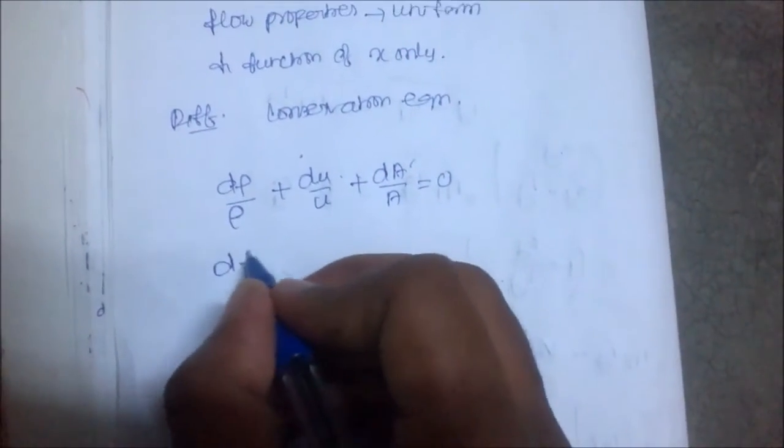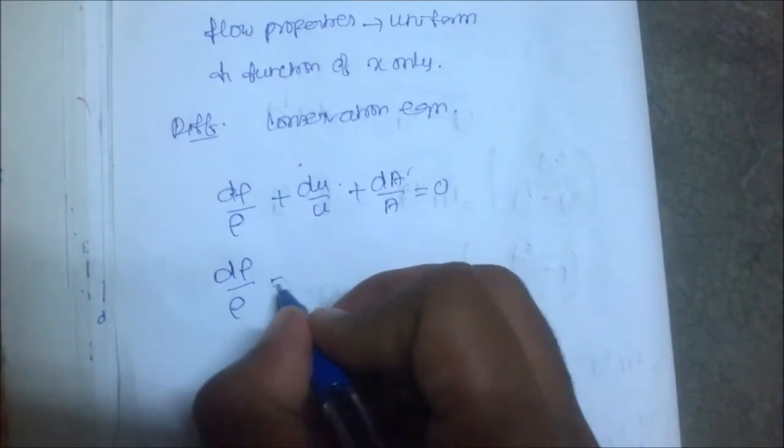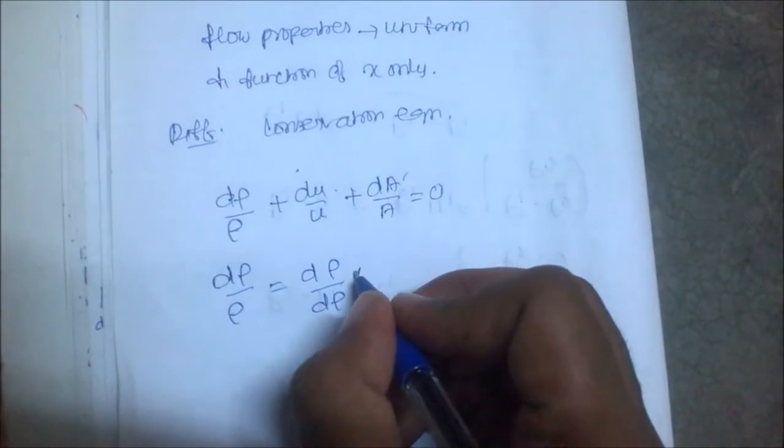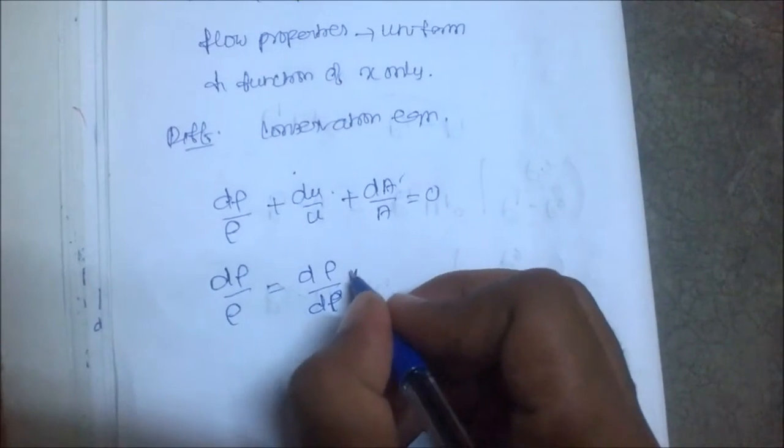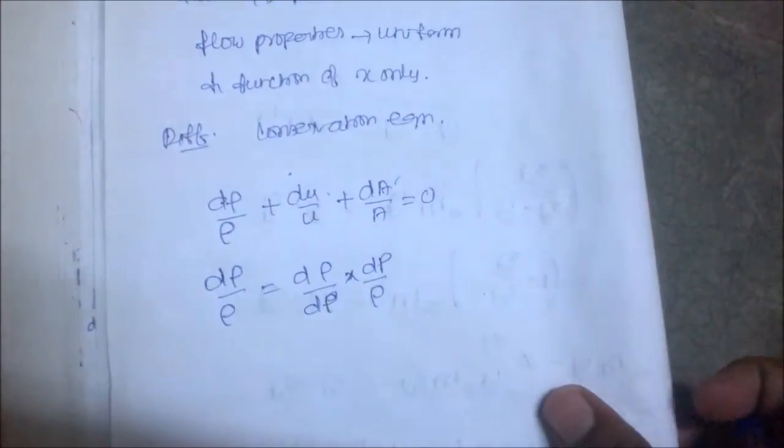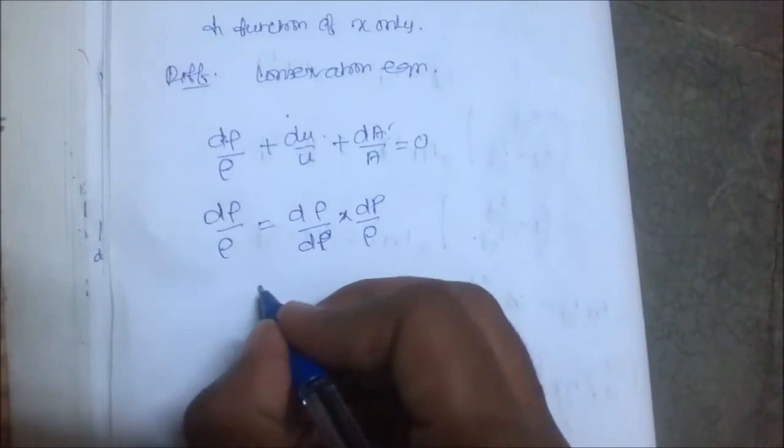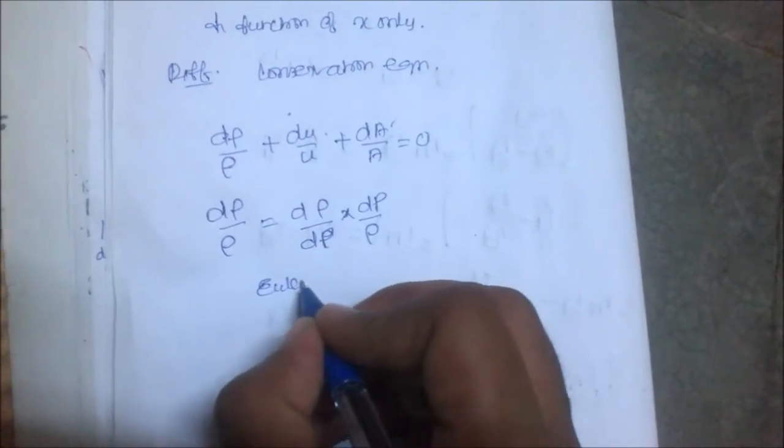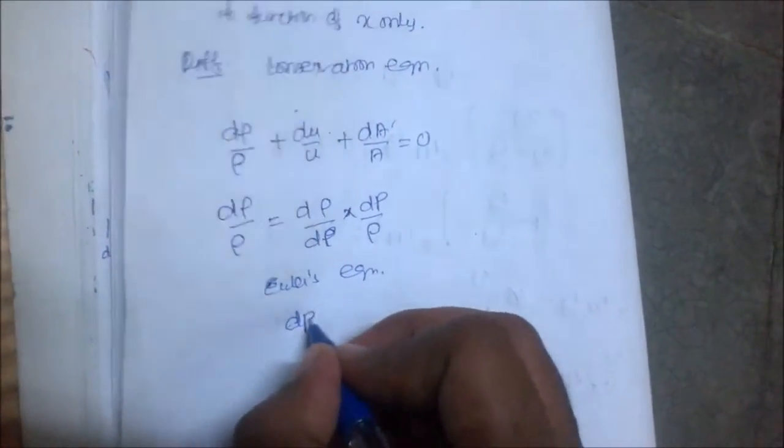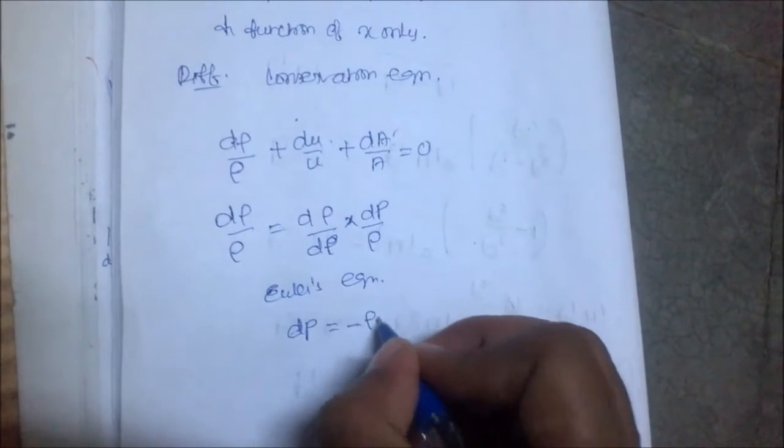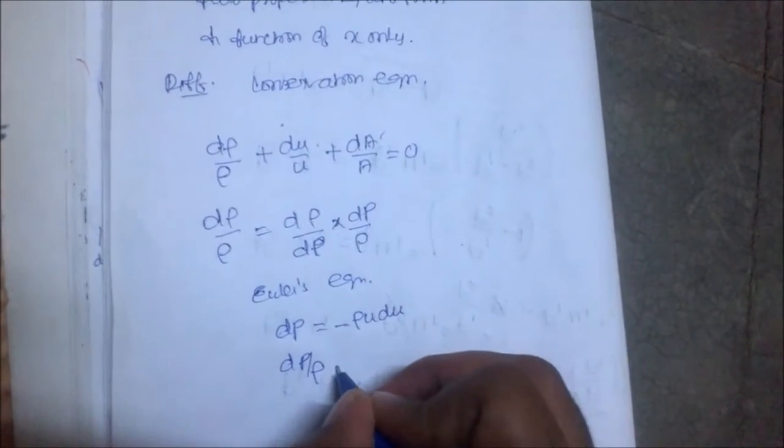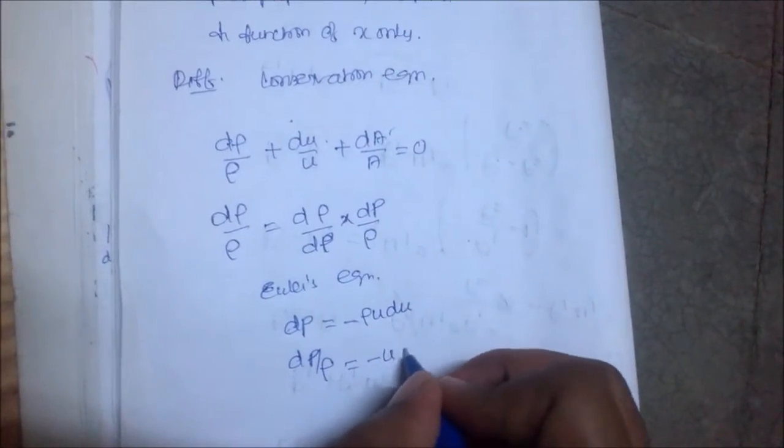From here, d rho/rho = (d rho/dp)(dp/rho). From Euler's equation, dp = -rho*u*du, so dp/rho = -u*du.